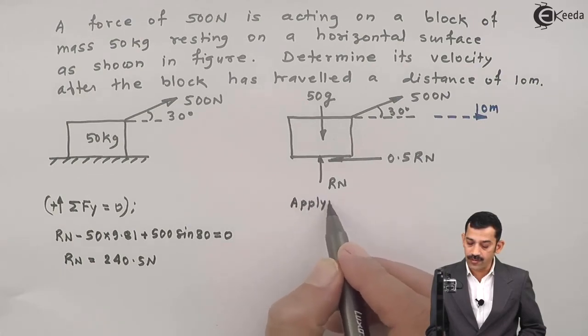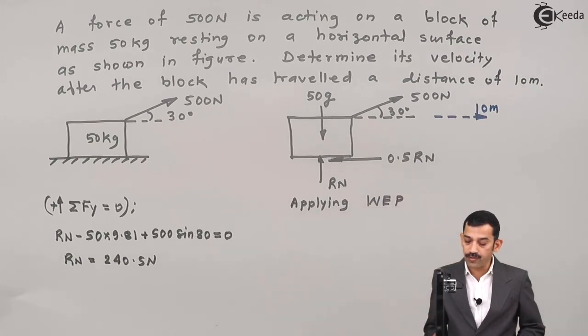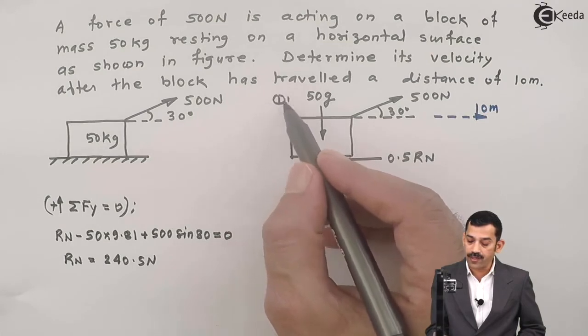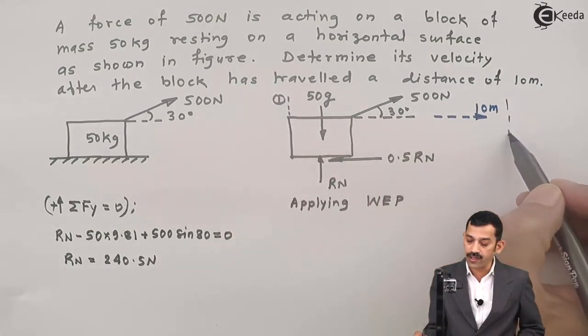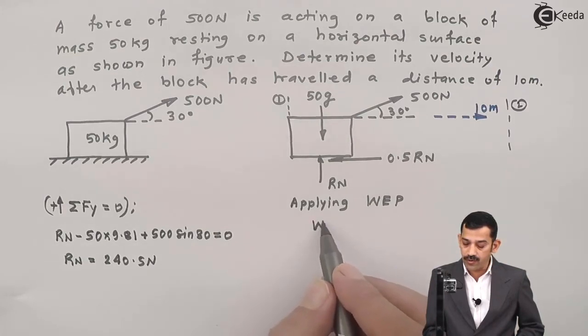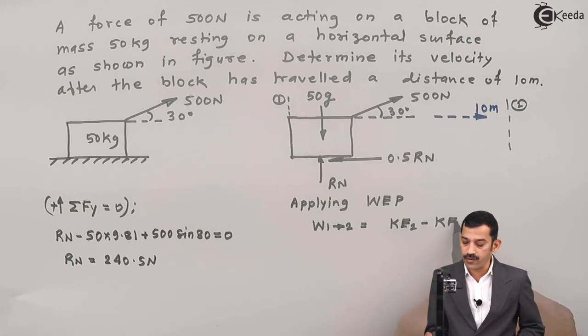Now if we apply work-energy principle from say position 1 to 2, this one is say position 1 and after 10 meters the position will be here as position 2. Our equation is: work done by forces when body moves from 1 to 2 is final kinetic energy, that is KE2, minus initial kinetic energy, KE1.